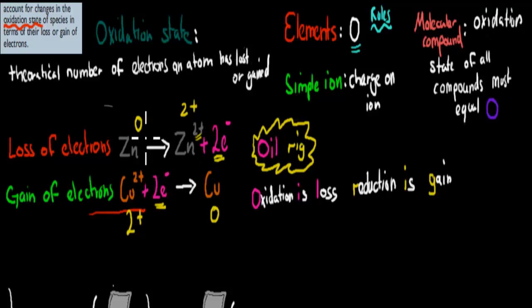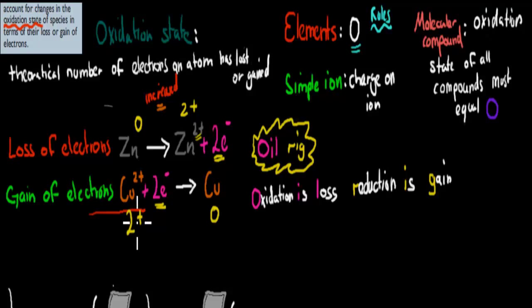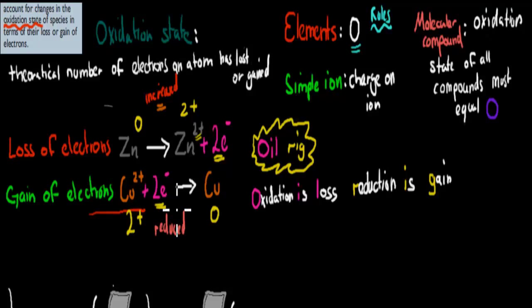Now we have to talk about the change in terms of reactants and products. Zinc starts at zero and then becomes zinc ion at +2, so the oxidation number has increased — it's gone from zero to +2. On the other side, copper was +2 and has gone from +2 to zero, so the oxidation number has been reduced.